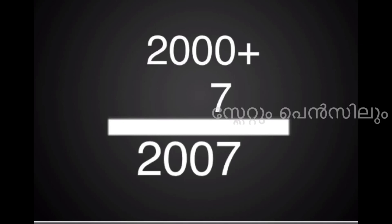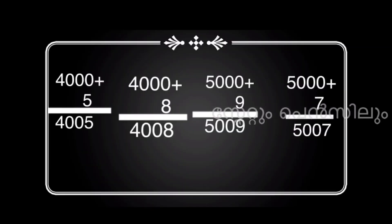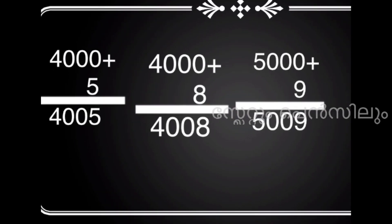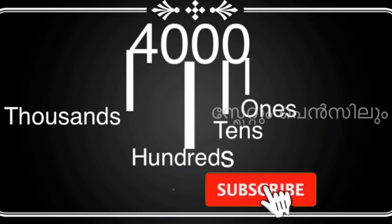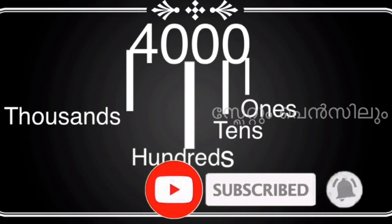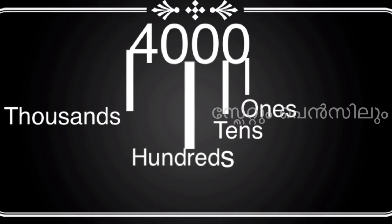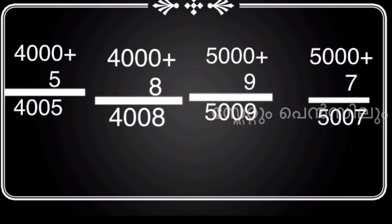We add 1-digit number to 4-digit numbers. Now if we add 4000 and a 1-digit number: 0 plus 5 in ones place value. This place value is clear. You can see a 4-digit number and its place values: ones 1, tens 10, hundreds 100, thousands 4000. Then we add 4,008. Then 5,009.